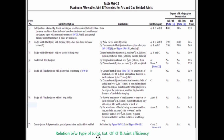Table UW-12 gives the relationship between type of joint, extent of radiographic examination, and joint efficiency. Joints are categorized into Category A, B, C, and D in accordance with their position in the vessel, and joints are also classified into different types: Type 1, 2, 3, 4, 5, 6, and 7.